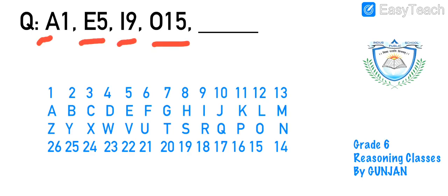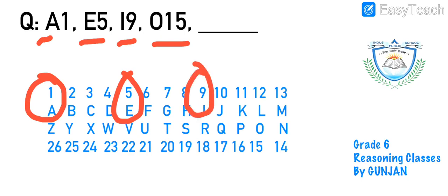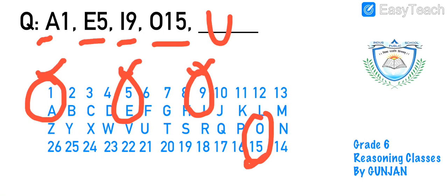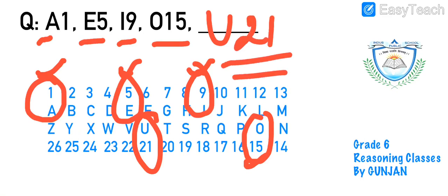Next: a1, e5, i9, o15. Reading this, a, e, i, o are all vowels — so the next vowel is u. The numbers are the positional values of each vowel: A is 1, E is 5, I is 9, O is 15. The position of U is 21. The answer is u21.